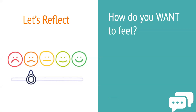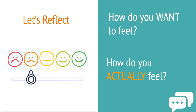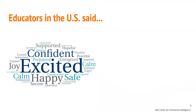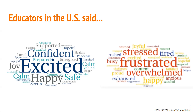And then think — how do you actually feel? Think about if these feelings are aligned. Are they opposite? Do they not align? The Yale Center for Emotional Intelligence actually surveyed thousands of U.S. educators and asked the exact same question. When asked how they wanted to feel, they said they wanted to feel excited, confident, joyful, happy. But how they actually felt was frustrated, stressed, overwhelmed.